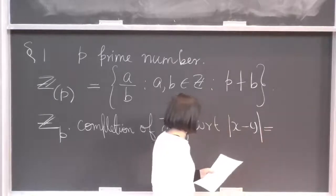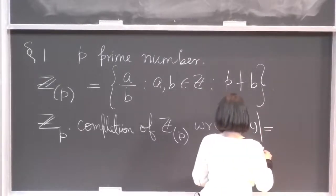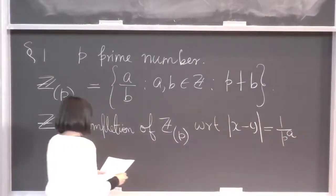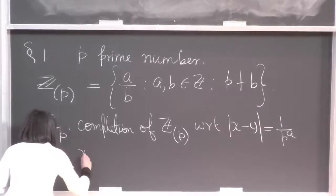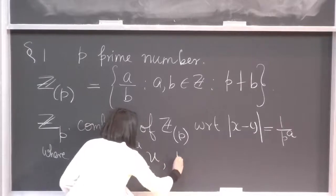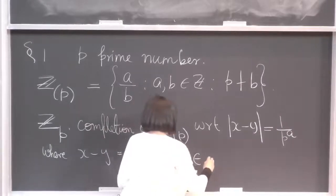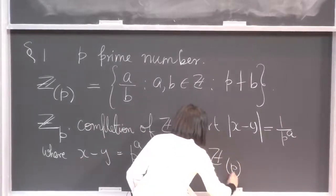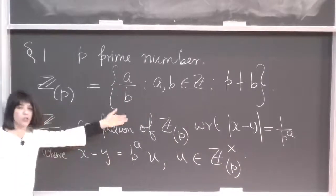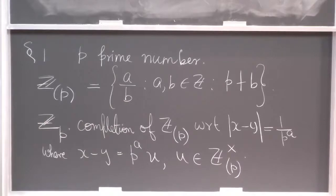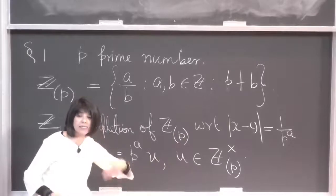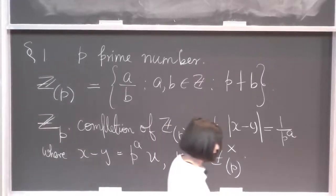You let the distance between two elements of Z_P be 1 over P to the A, where you write X minus Y as a power of P times some invertible element U. You pull out the highest power of P, and this makes Z_P a metric space, and then you just complete, as you do in analysis.